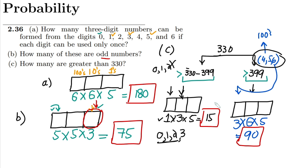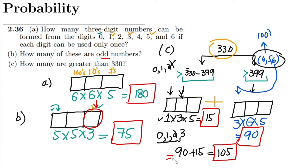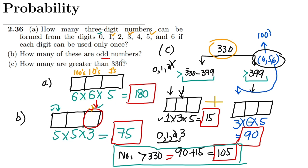Adding the two cases together: 90 plus 15 equals 105. That is the answer — 105 numbers are greater than 330. I hope you have understood the underlying concepts. I have tried to make clear how to approach questions like this. If you have any questions, you can ask in the comment box. See you soon.